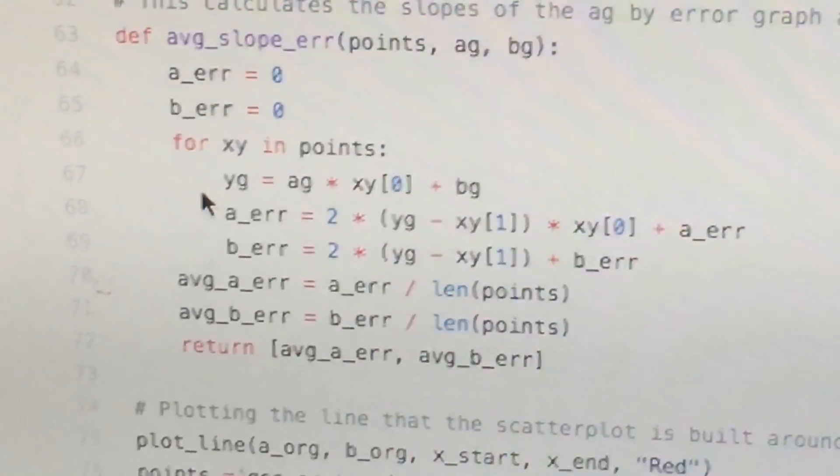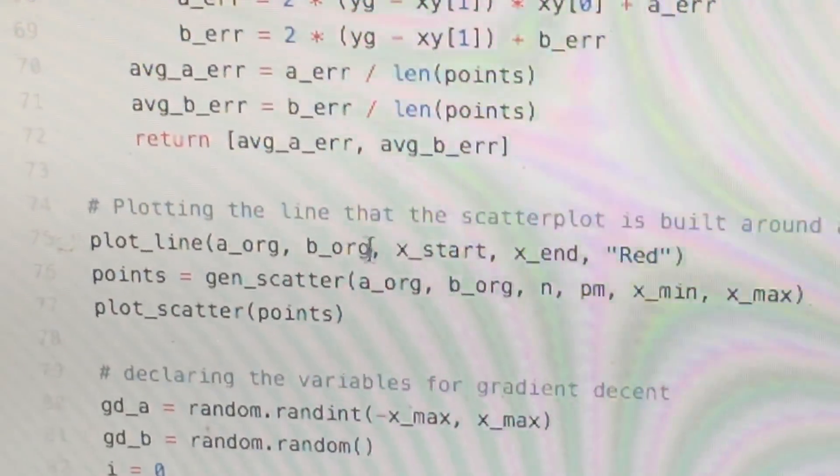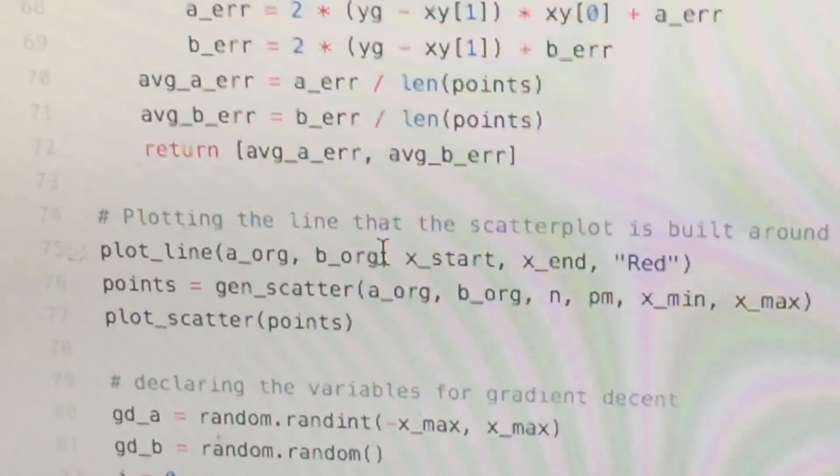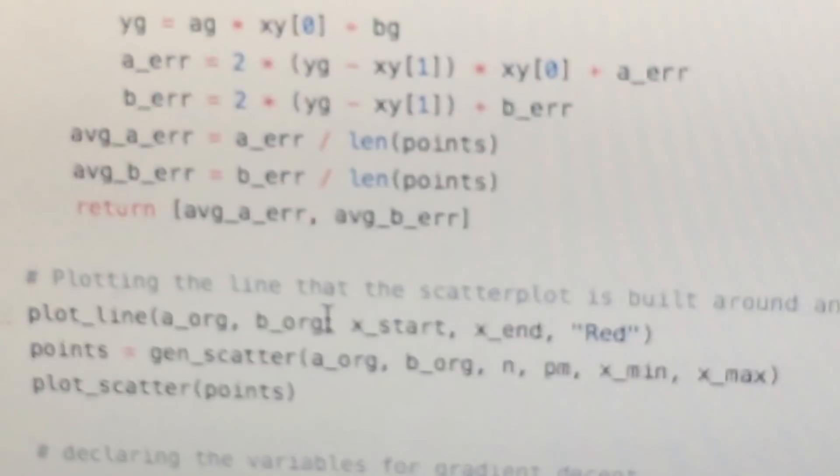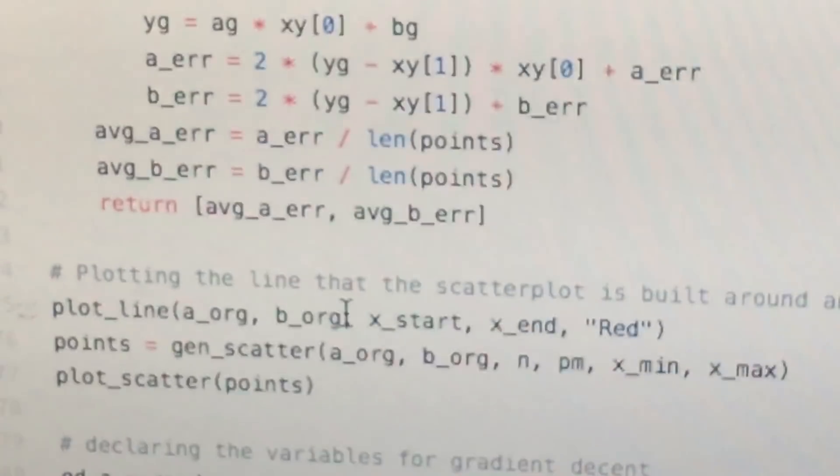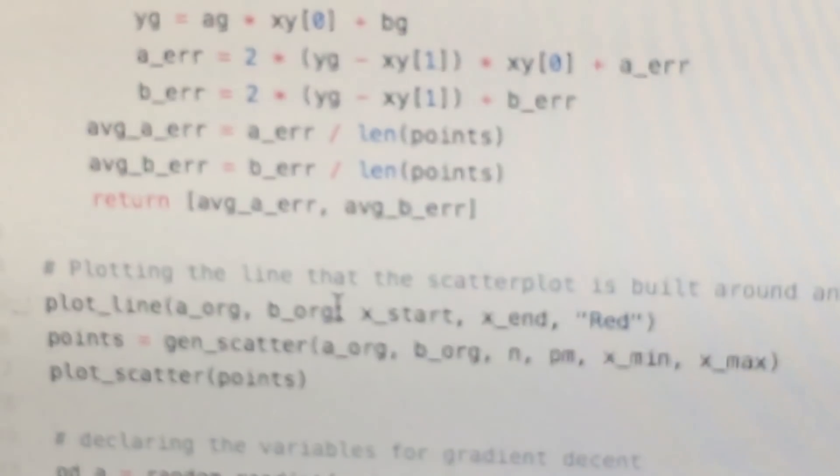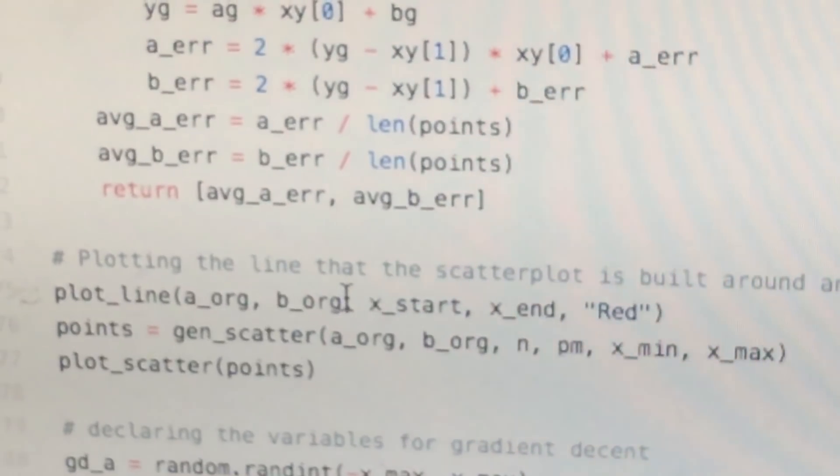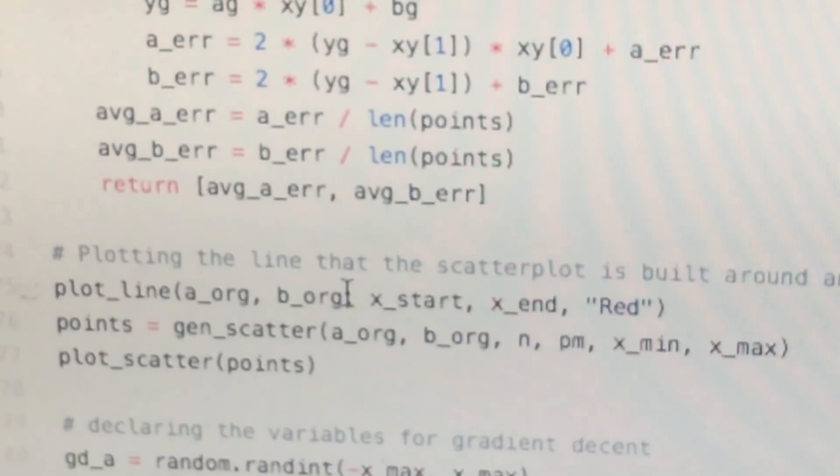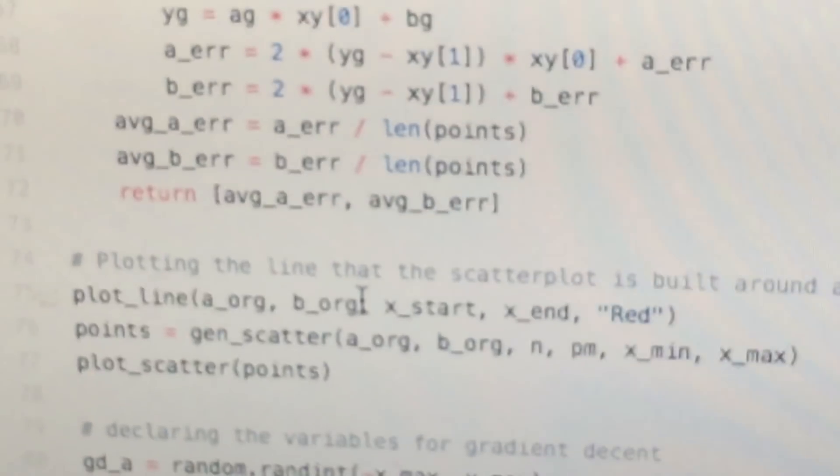And then over here calculations, and then it returns you a list of the average a error and the average error b. So when you plot the line, you're plotting the line that's built around the scatter plot. So this is simply just plotting the scatter plot and the line which you originally built the scatter plot, which I showed you. So this is nothing related.